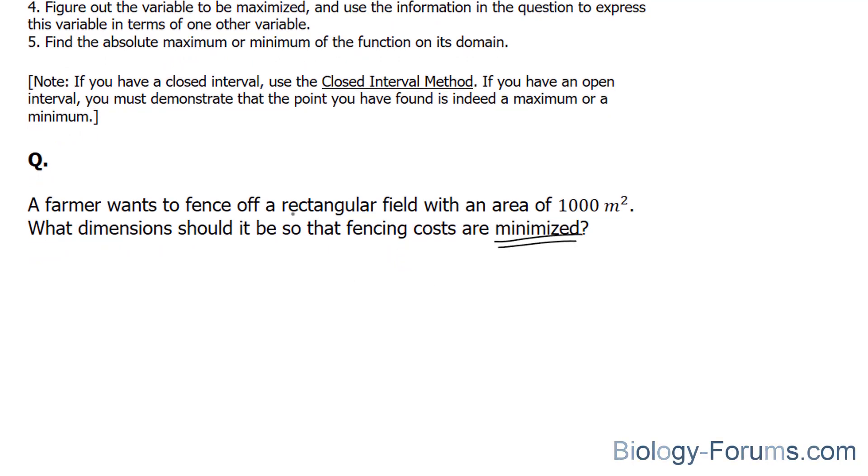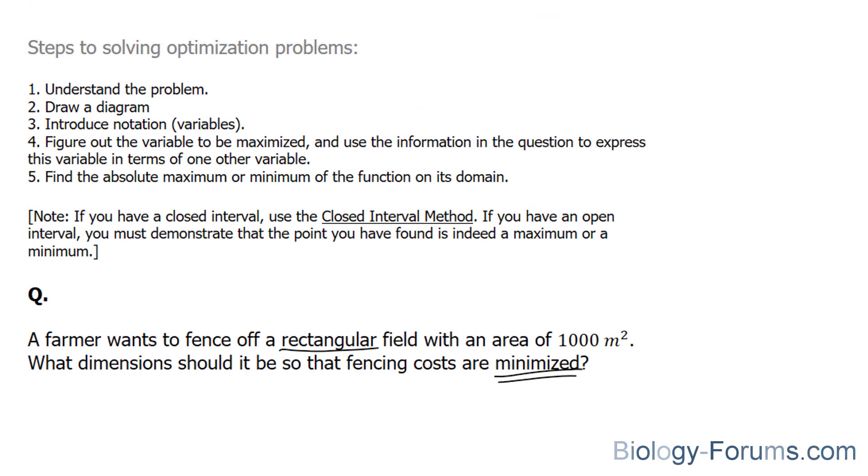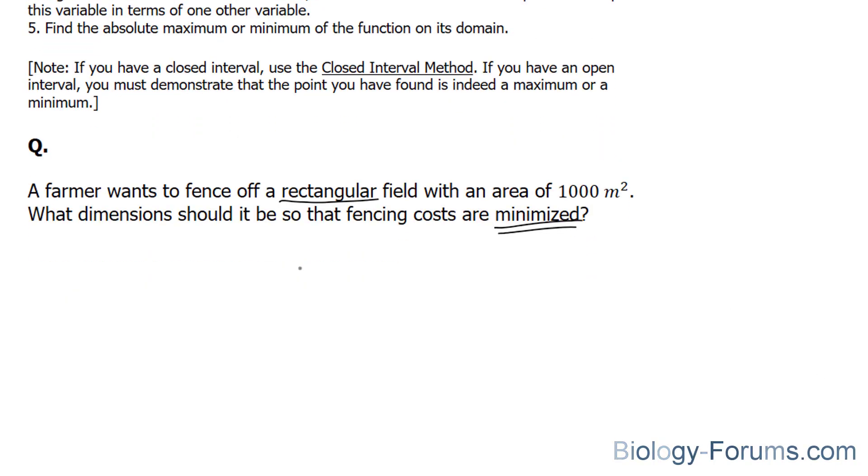So we know that the fence will be a rectangle and that its area will be 1,000 meters squared. So let's start off by writing out some important formulas. We know that the area of a rectangle equals length times the width.